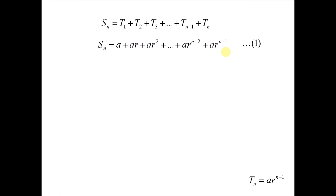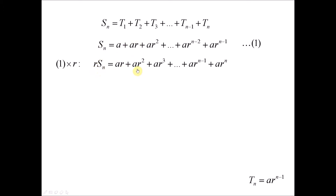If we multiply equation 1 by r, all terms are multiplied by r, we get r·Sn on the left. On the right, a becomes ar, ar becomes ar squared, ar squared becomes ar to the power of 3, and ar to the power of n minus 1 becomes ar to the power of n. We label this as equation 2.